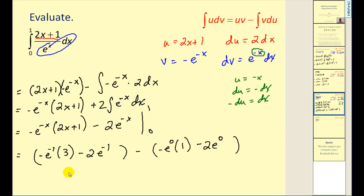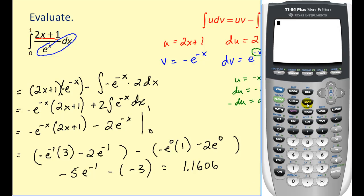So when we sub in a 1, we'd have this. And these are actually like terms. We'd have a negative 5 e to the negative 1 minus, over here, remember, e to the 0 would be 1. So we'd have a negative 1 minus 2 or a negative 3. And the final result would be approximately 1.1606. Now we can check this on the graphing calculator since it is a definite integral. Let's go ahead and do that.